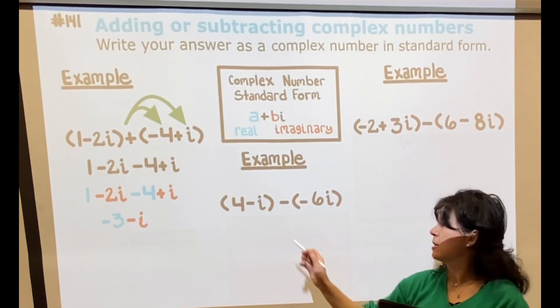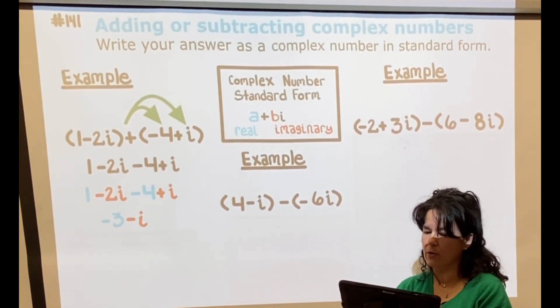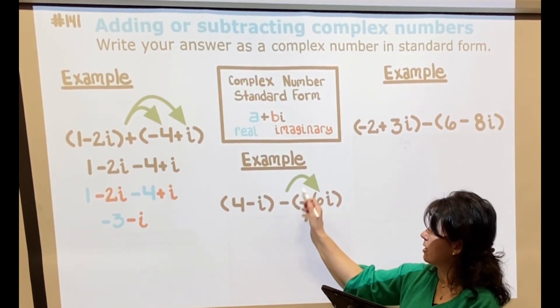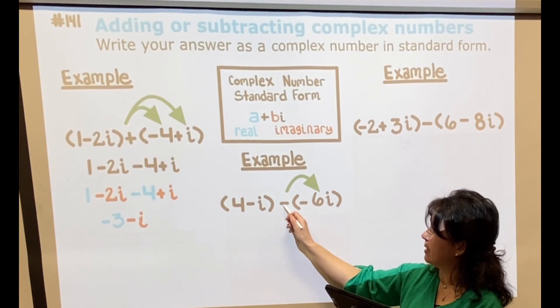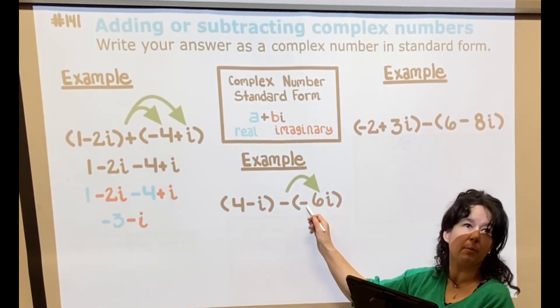If I subtract these two complex numbers, I'm going to distribute the negative through, and I have negative 1 times negative 6i, so that's going to make a plus 6i.